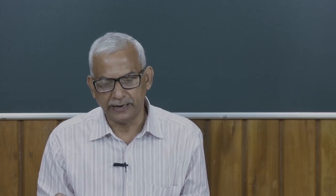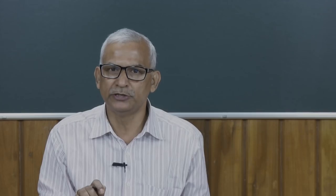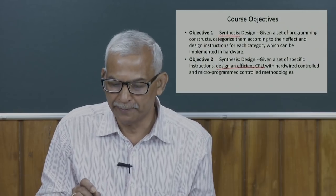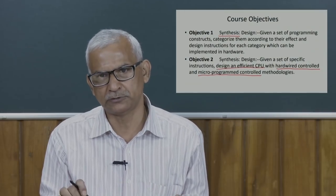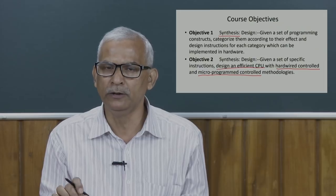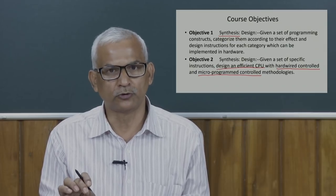Objective 2 is also at the design level: given a set of specific instructions, design an efficient CPU with hardware-controlled and microprogram-controlled methodologies. The basic objective is the design of an efficient CPU — central processing unit. While designing the processor, we will look at two methodologies: hardware-controlled and microprogram-controlled. Once this objective is met, the learner will be able to design a processor using either methodology.